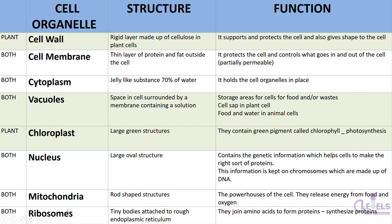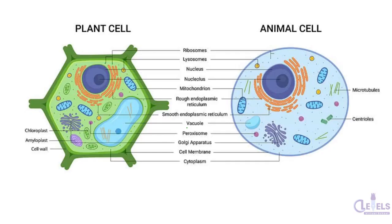Next we have ribosomes, which are present in both plant and animal cells. They are tiny bodies that may be attached to the rough endoplasmic reticulum or suspended in the cytoplasm. The endoplasmic reticulum is a network of membranes present in the cell. Ribosomes are important because they synthesize proteins — they join amino acids together, and since amino acids are the building blocks of proteins, this is how proteins are formed.